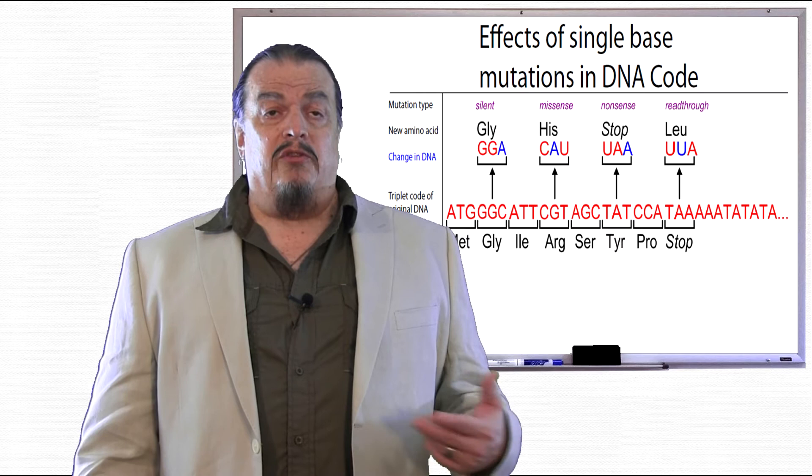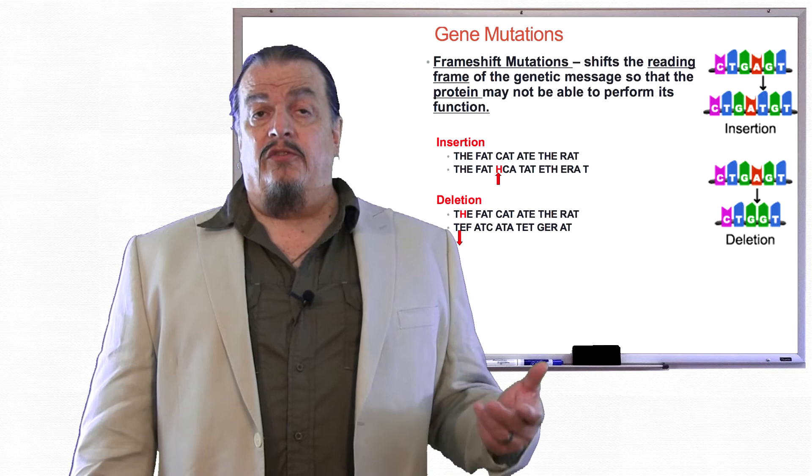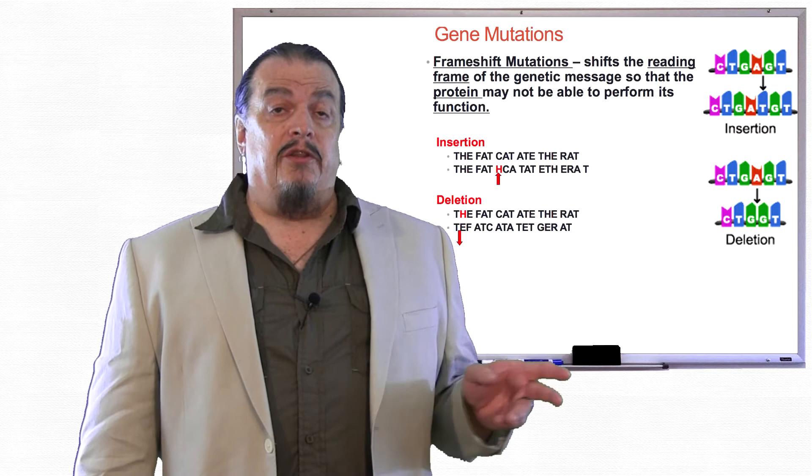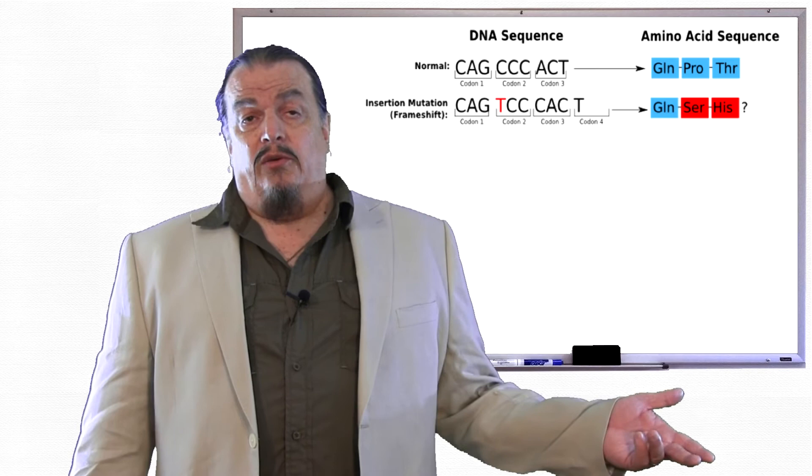And one thing that can happen when a base pair is changed in reading the frame is that it can cause the frame to shift and change the codons that follow them. Like the sentence example of this graphic, inserting or adding an H where it doesn't belong in the sentence shifts all the other letters over, changing the words. Remember, unlike sentences, codons are limited to three letters, so adding a base that doesn't belong can shift the whole reading frame to the right. The opposite can happen when you delete a base. The reading frame shifts to the left and you're missing one base pair at the end.